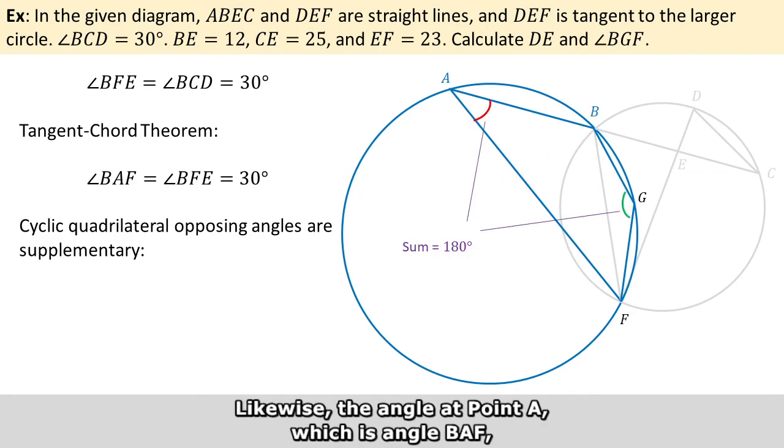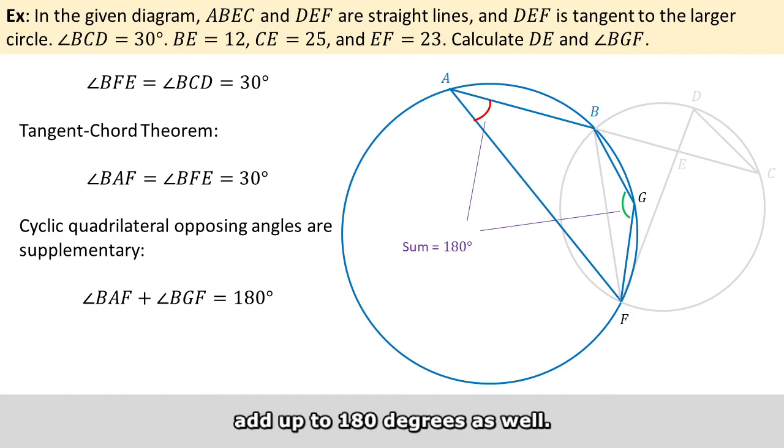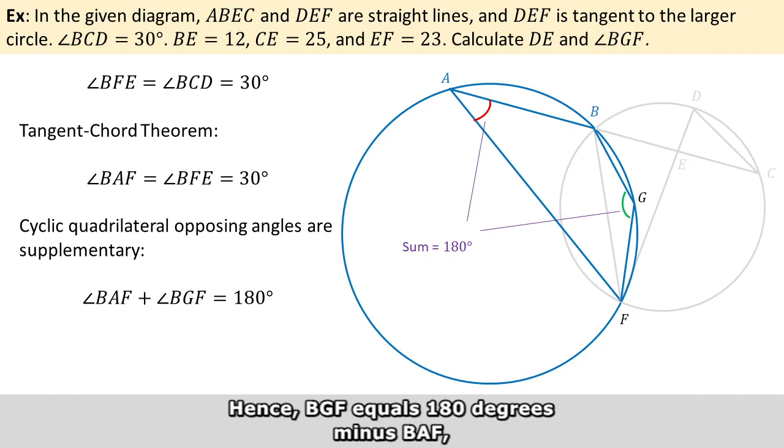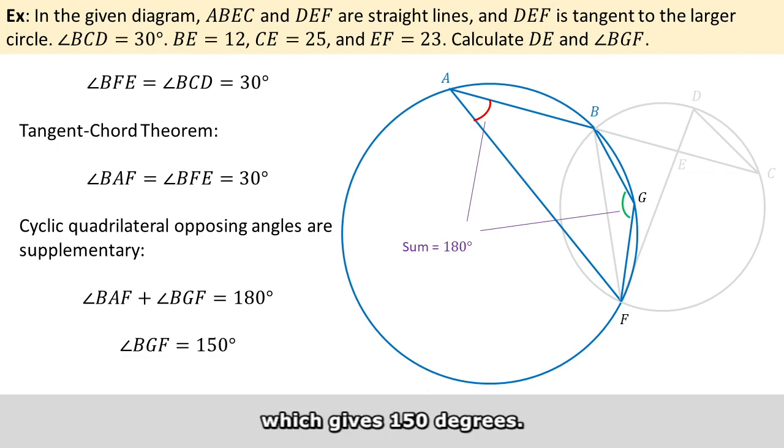Likewise, the angle at point A, which is angle BAF, and the angle at point G, which is angle BGF, add up to 180 degrees as well. Hence, BGF equals 180 degrees minus BAF, which gives 150 degrees.